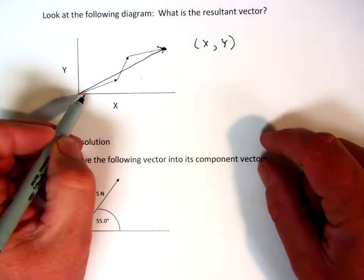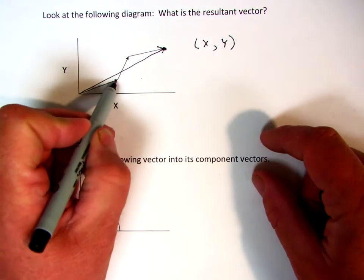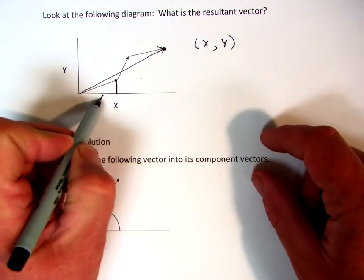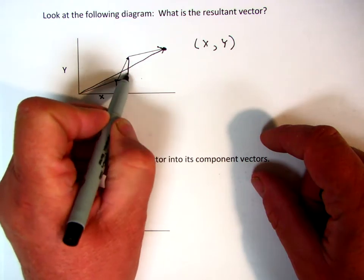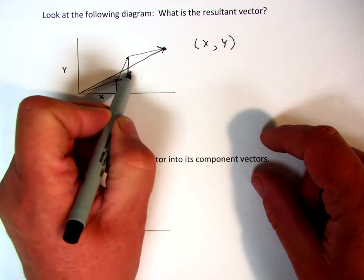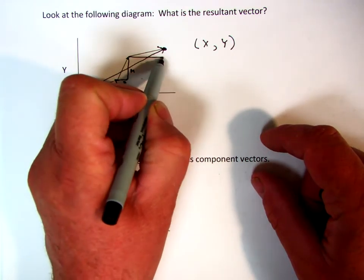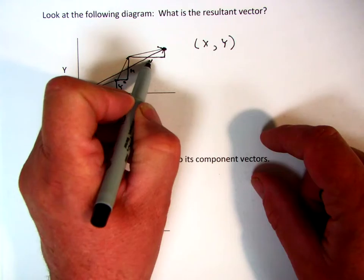But if you look at what its values of x are, look at this vector. Doesn't it have a value of x and a value of y? Doesn't this one have a value of x and a value of y? And the third one has a value of x and a value of y.